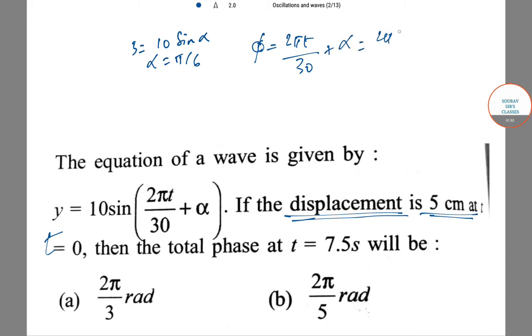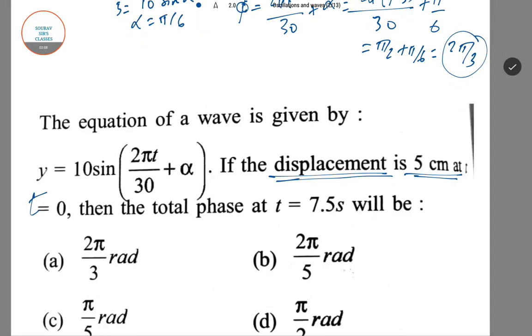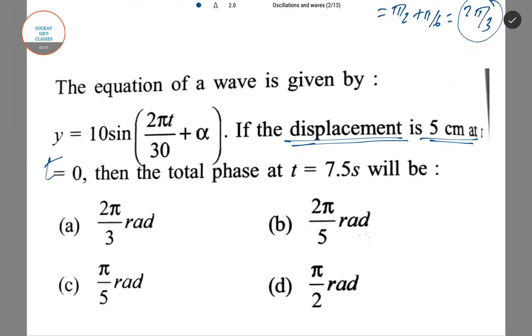θ = 2πt/30 + α = 2π(7.5)/30 + π/6 = π/2 + π/6 = 2π/3. Hence the total phase at t = 7.5s is 2π/3 radians. So option A is the correct answer.